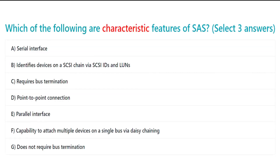Which of the following are characteristic features of SAS? Select three answers. A. Serial interface. B. Identifies devices on a SCSI chain via SCSI IDs and LUNs. C. Requires bus termination. D. Point-to-point connection. E. Parallel interface. F. Capability to attach multiple devices on a single bus via daisy chaining. G. Does not require bus termination.